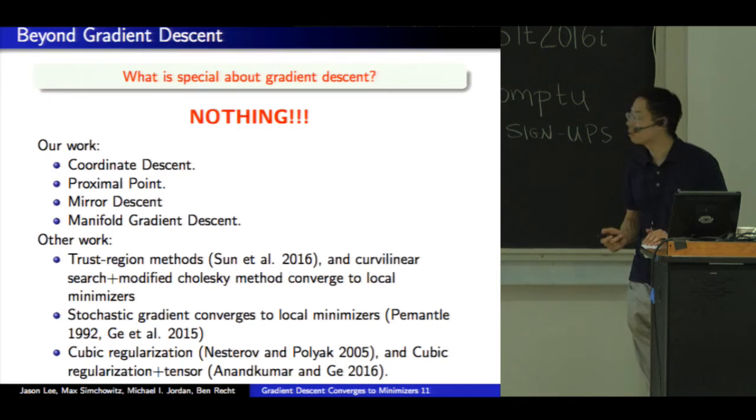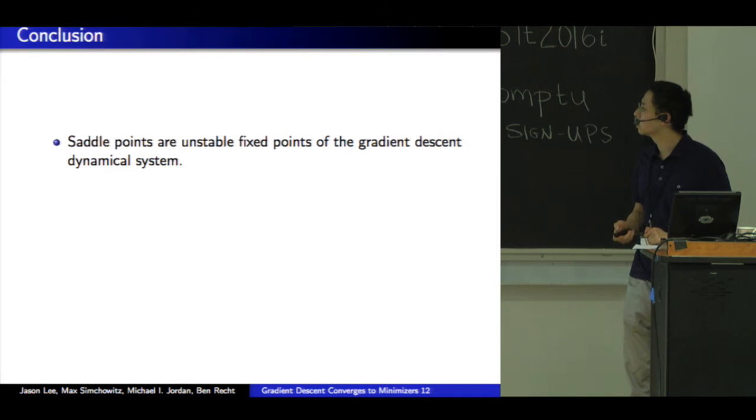There's a lot of other work that shows how to escape from saddle points. Trust region methods. And there's also these things called curvilinear line search where you explicitly line search along directions of negative curvature in addition to the gradient. Stochastic gradient converges to local minimizers on these two papers. P-Mantle and Rong and Qi showed this also last year's Colt. And Nesterov's cubic regularization. And also Rong's talk shows how to use that to escape higher order saddles.